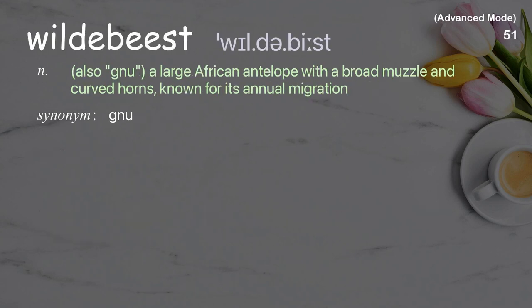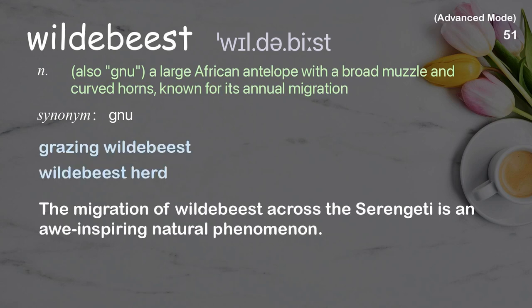Wildebeest: Also known as gnu, a large African antelope with a broad muzzle and curved horns, known for its annual migration. Examples: grazing wildebeest, wildebeest herd. The migration of wildebeest across the Serengeti is an awe-inspiring natural phenomenon.